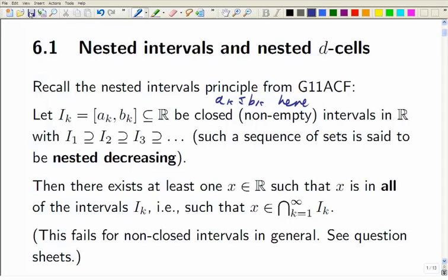So you've got these intervals, and each one contains the next one as a subset. So I_1 is a superset of I_2, which is a superset of I_3, and so on. Then there has to be at least one real number which is in all of them at the same time. In other words, if you intersect all of these intervals, there's still something left that's in every single one of them at the same time.